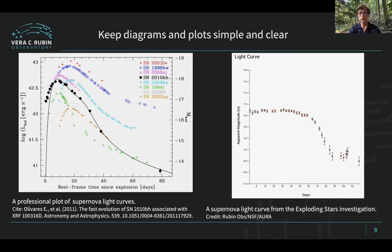We also try to keep all of the diagrams and plots of data as simple and clear as possible. On the left, you see a very attractive and well-done plot from a scientific paper on supernova light curves, but there's a lot of busyness to that plot. On the right, you see a sample light curve that we have created from our investigation. We're only giving the students information that they need to know.